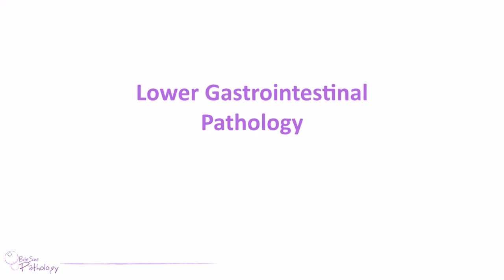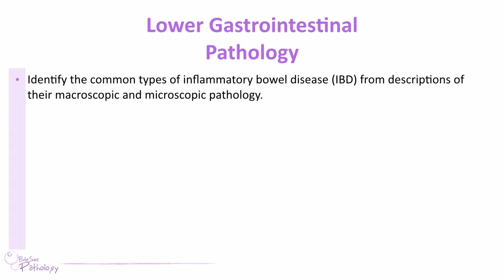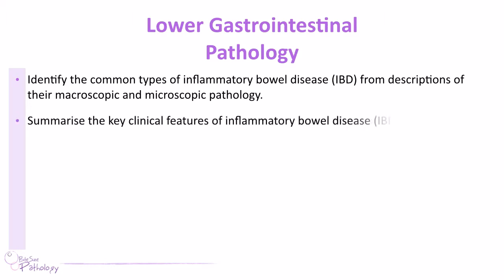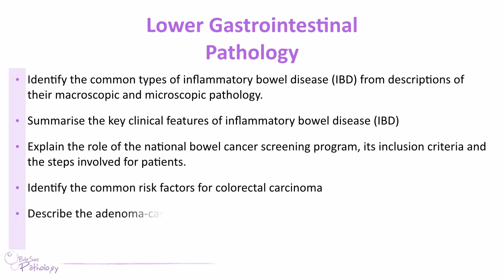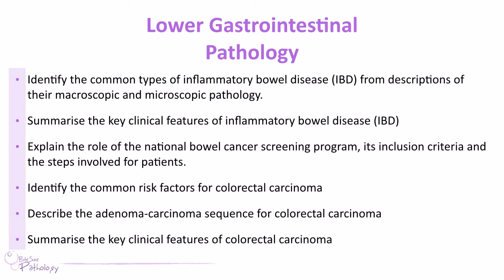So what are we going to look at today? First, we'll look at the common types of inflammatory bowel disease or IBD, specifically their microscopic and macroscopic pathology and how that leads to clinical presentations. We'll then look at key clinical features of IBD, the National Bowel Cancer Screening Programme in the UK, risk factors for colorectal cancer, the adenoma-carcinoma sequence, and finally the key clinical features of colorectal carcinoma.